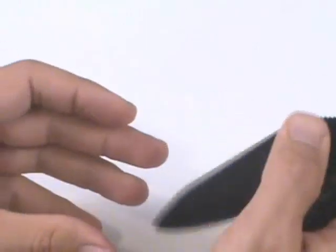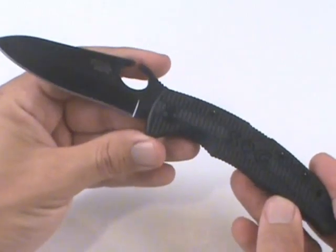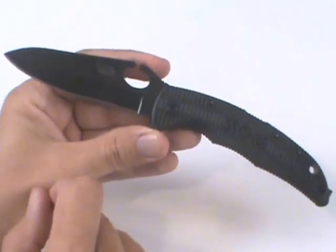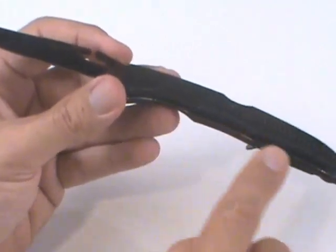There's a loop in the blade, a hole there that allows you to open it with one hand. Just put your thumb in that and flick it open. And once you open it up you'll see that the blade is fairly full and thick and it's got a black Tainai finish for corrosion resistance.